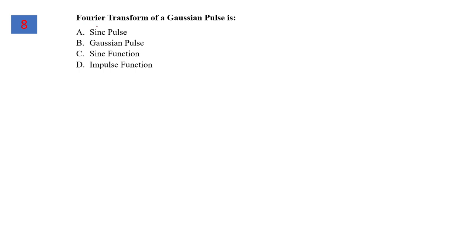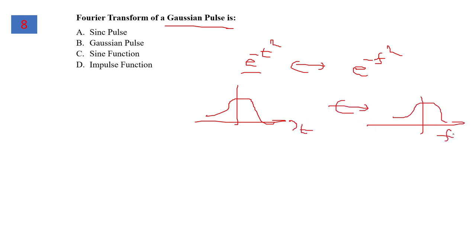Question 8 is about the Fourier transform of a Gaussian pulse. Remember that a Gaussian pulse written in this form always has a Gaussian Fourier transform. A Gaussian pulse will always have a Gaussian shape in the frequency domain. Option B is correct for question 8.